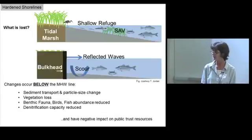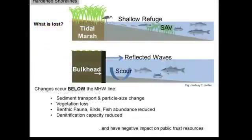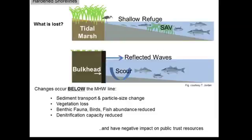When we harden the shoreline with a bulkhead, we lose vegetated intertidal area. Waves no longer absorbed by marsh instead hit the bulkhead and bounce back, scouring and deepening the bottom — losing that shallow water refuge and fish habitat. Bulkheads are placed at or above mean high water, but the habitat losses occur below mean high water, which is a public trust resource.